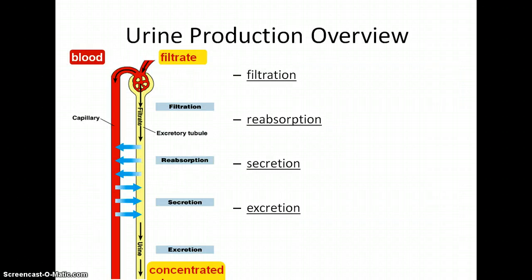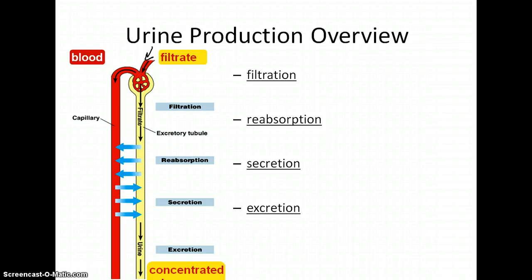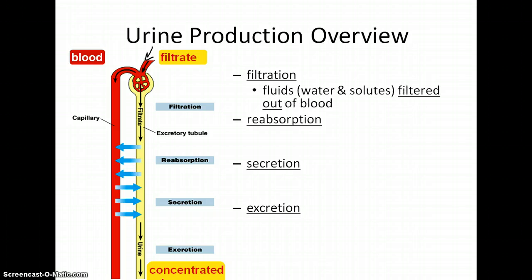Looking at this generalized schematic, the yellow represents the nephron and the red is the peritubular capillary. Blood goes in, gets spun around and filtered like a centrifuge, and goes out the peritubular capillary. That first step is called filtration — a massive amount of blood gets filtered and water and dissolved substances get pushed out into the filtrate.